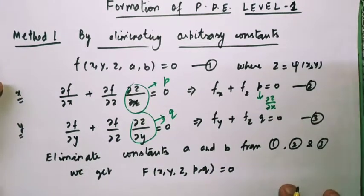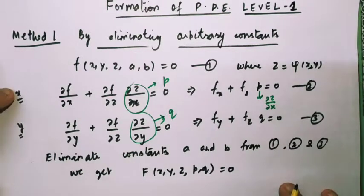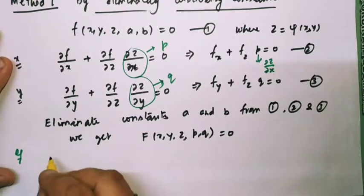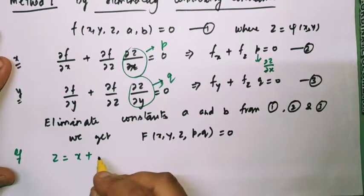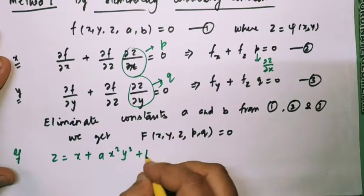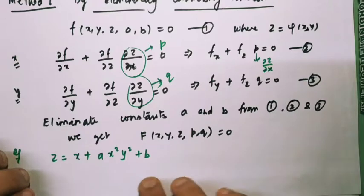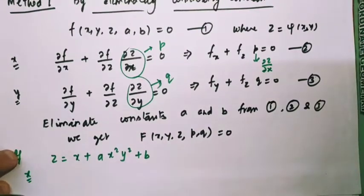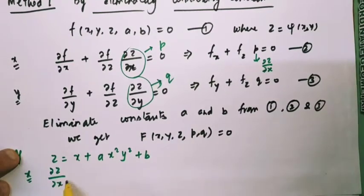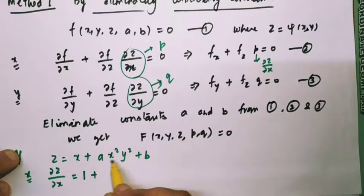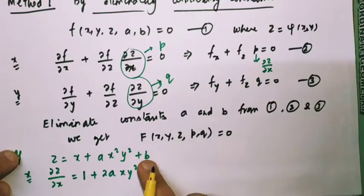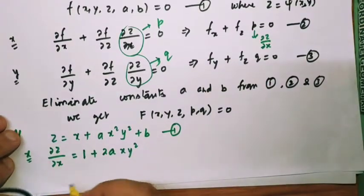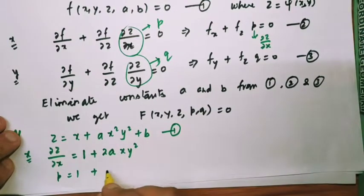Let us look at one problem to understand more clearly how to form a PDE by eliminating arbitrary constants. Consider the example: z = (x + ax²y²) + b, where a and b are arbitrary constants. I will differentiate with respect to x and y. Differentiating partially with respect to x: ∂z/∂x = 1 + 2axy², and b is a constant so its derivative is 0. So the first equation is p = 1 + 2axy².